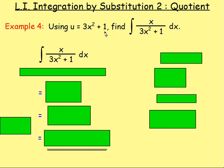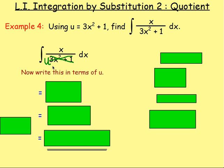We're replacing 3x squared plus 1 with u. So really what we would do is this would become x over u. The whole of that bottom line, the 3x squared plus 1, would become u. So really we would have x over u dx. But then we would have it written in terms of both x's and u's, and we don't want that. We want it written entirely in terms of u. So we need to find what x dx is equal to.